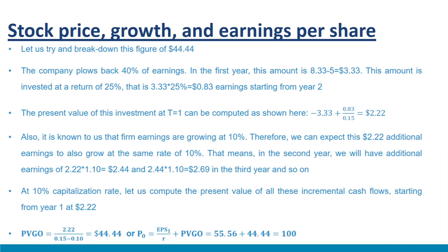COMCOM is a growth stock not simply because its earnings are growing at 10%, but because the PV of its future investments accounts for a significant portion — about 44% — of its stock price. Today's stock price reflects investor expectations about the earning power of both the firm's current and future assets. To summarize, growth stocks have high future earning potential due to projects with positive NPVs when discounted at the market capitalization rate. In contrast, an income stock does not have positive NPV projects and may find it suitable to pay out most earnings as dividends. PVGO is large relative to the capitalized value of EPS for growth stocks, while for income stocks PVGO is a very small fraction of the overall firm value.